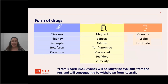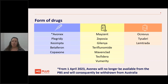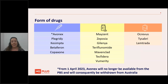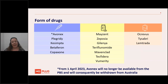Categorising these drugs is a really good way to get your head around the differences, because there are so many. In terms of form: injectables include Avonex, Plegridy, Kesimpta, Betaferon and Copaxone — noting that Avonex will no longer be available, so people on it will need to review and possibly change. Oral medications include Mayzent, Zeposia, Gilenya, Teriflunomide (the generic for Aubagio), Mavenclad, Tecfidera and Vumerity. Infusions include Ocrevus, Tysabri and Lemtrada.